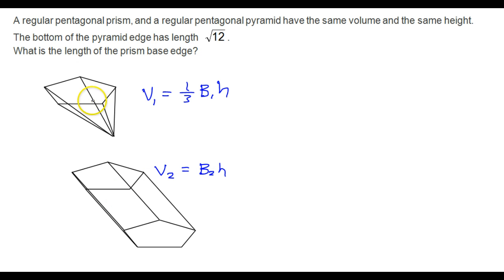I'm going to think of the pyramid as figure 1 and the prism as figure 2. So for the pyramid the volume is one third the area of the base which I'll call base number 1 times the height and for the prism the volume will be just the area of the base times the height. I'll call that B2. I'm just calling the height H because they have the same height so I don't have to use two different variables for that.